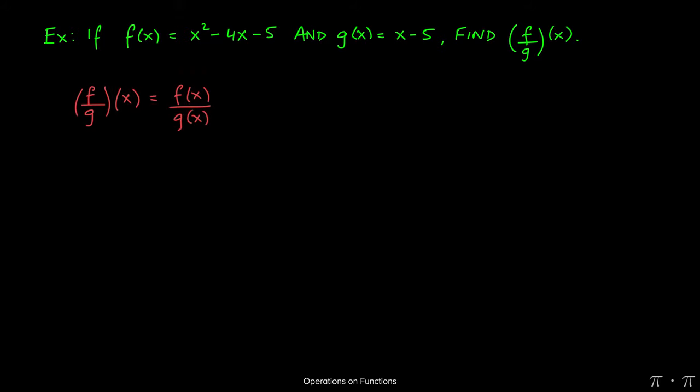We start again with notation. f over g of x is simply f of x divided by g of x. We're just looking for the quotient of the two functions.